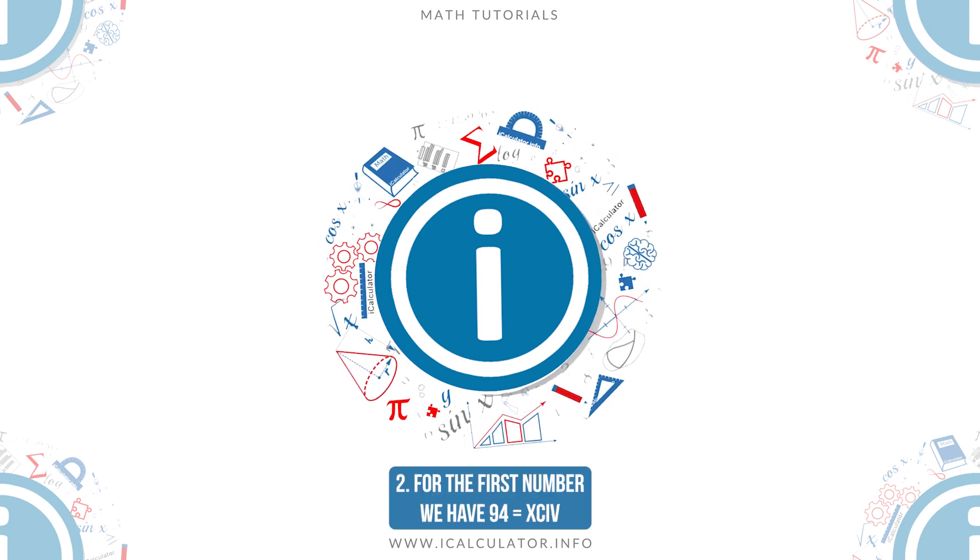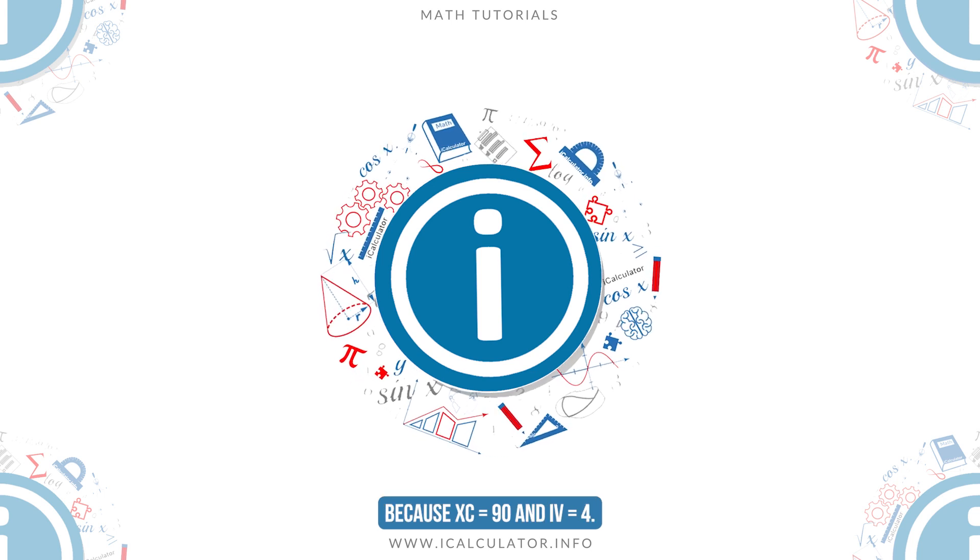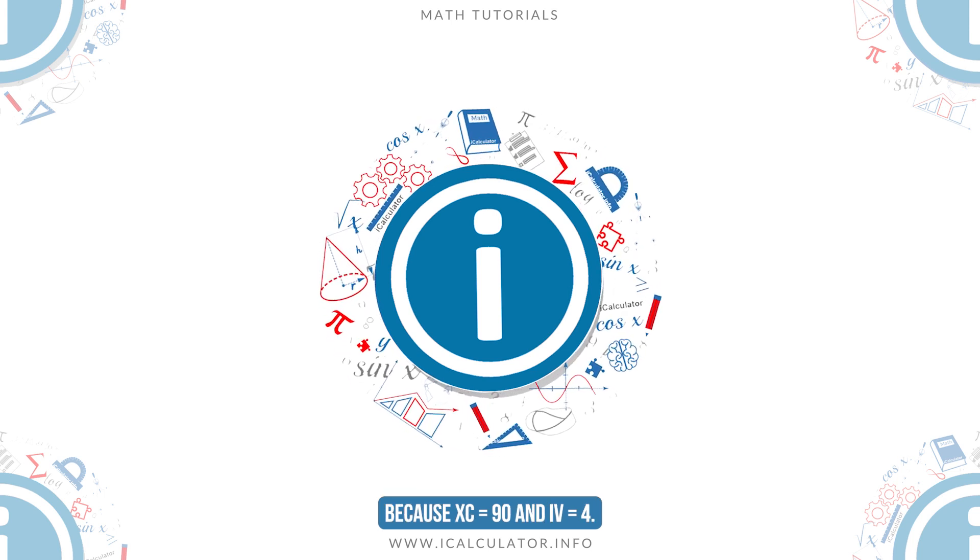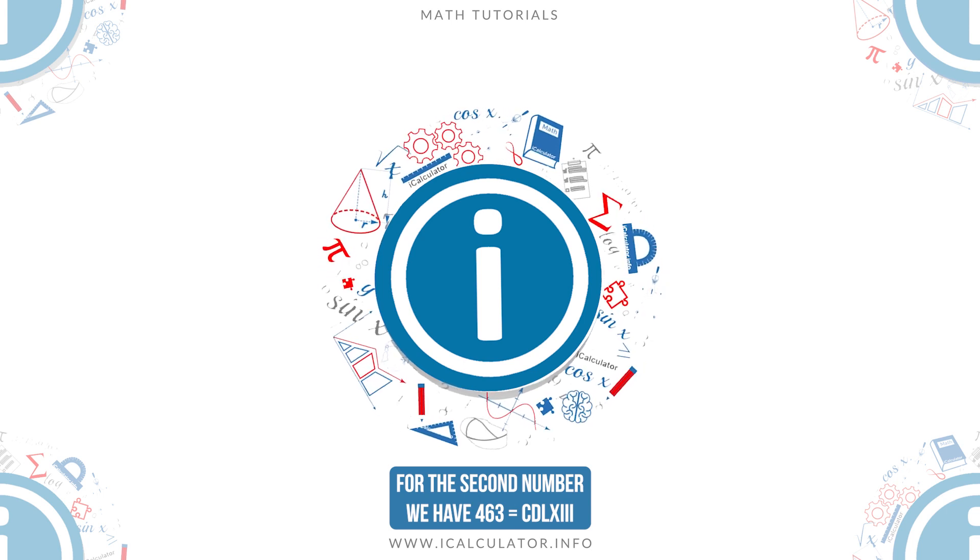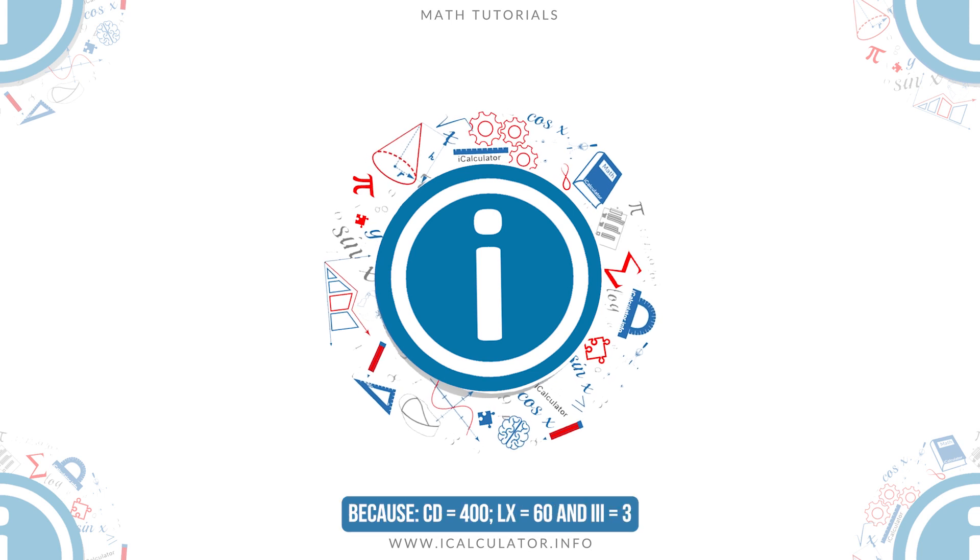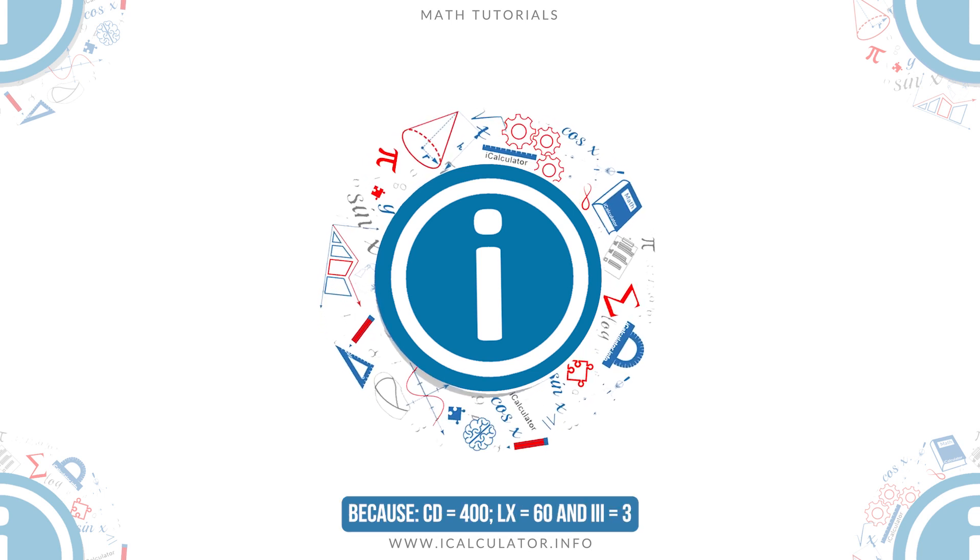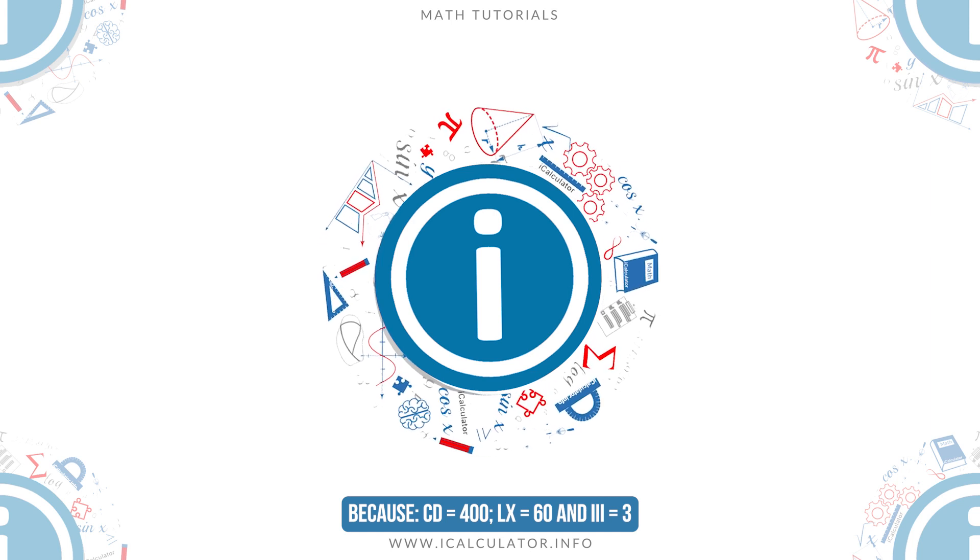2. For the first number we have 94 equals XCIV because XC equals 90 and IV equals 4. For the second number we have 463 equals CDLXIII, because CD equals 400, LX equals 60, and III equals 3.